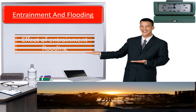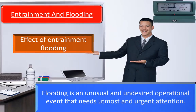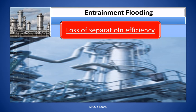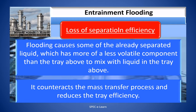Effect of Entrainment Flooding. Flooding is an unusual and undesired operational event that needs utmost and urgent attention. The first noticeable effect of flooding is loss of separation efficiency. Flooding causes some of the already separated liquid — which has more of a less volatile component than the tray above — to mix with the liquid in the tray above. It counteracts the mass transfer process and reduces the tray efficiency.